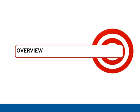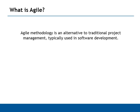Let me take you through some basics about what is Agile and what is Scrum. Agile methodology is an alternative to traditional project management, typically used in software development, and it helps teams respond to unpredictability through incremental iterative work measures known as sprints.